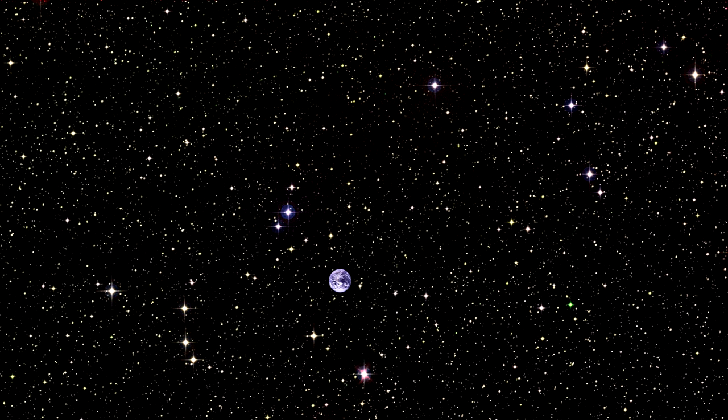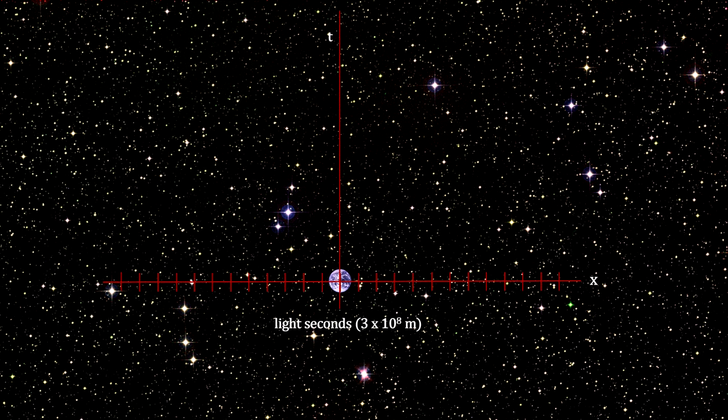We can now graph light using our space-time coordinates. For this, we use the distance light travels in one second for the units on the x-axis.